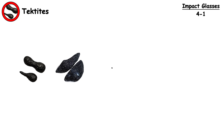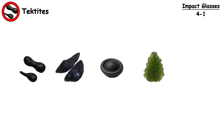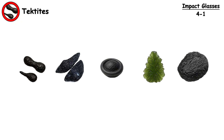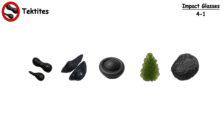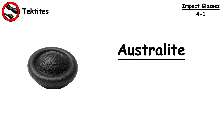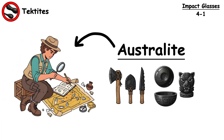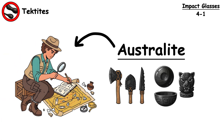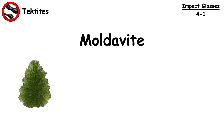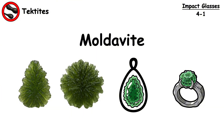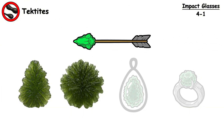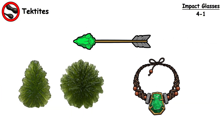Tektites have different subtypes based on both their geometric shapes and the regions where they are discovered. Australites were used as cutting tools and ceremonial objects by Aboriginal Australians long before scientists understood their origin. Moldavites have been used in jewelry since the Stone Age — people have found Moldavite arrowheads and amulets in archaeological sites across Europe.